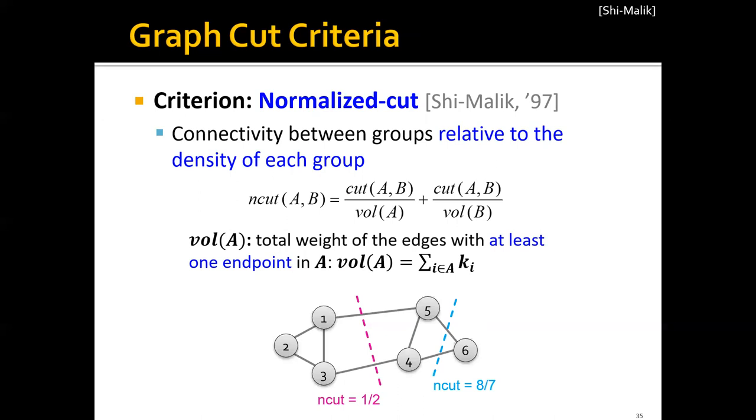Let's look at a simple example. Let's say that we have this simple graph of six nodes. If we cut this graph here and partition it into two groups, one group is nodes 1 to 3 and the other group is nodes 4, 5, and 6,